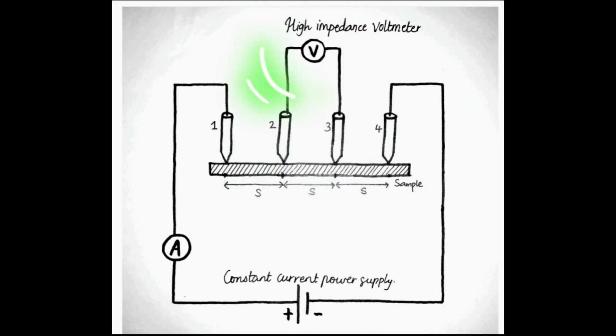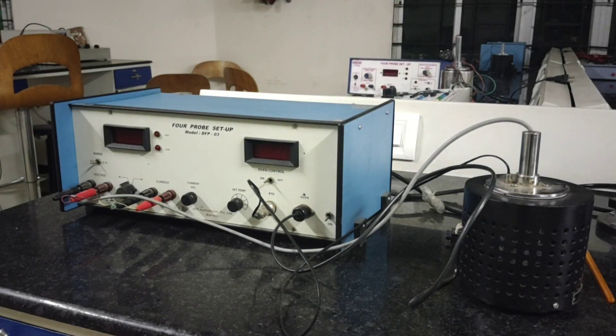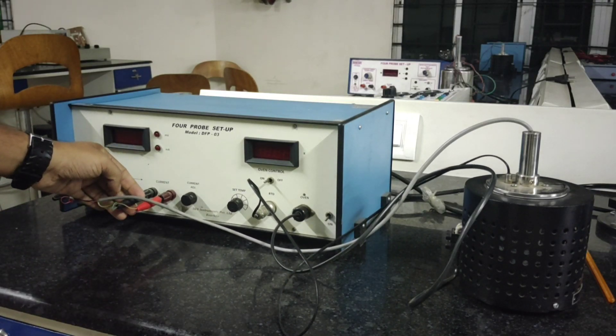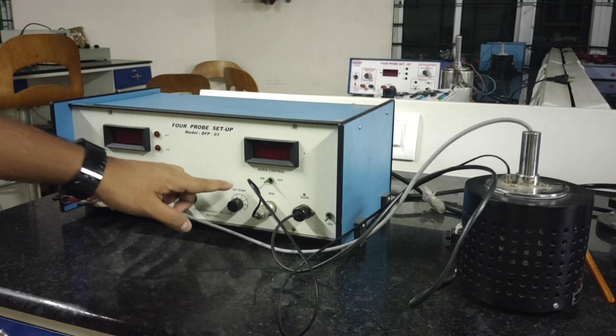This video will show you how to work with the four probe setup. Every connection will already be there, so you don't have to do anything. These are the connections for the voltage and this is for the current. This knob will adjust the current and this is for the temperature of the oven.